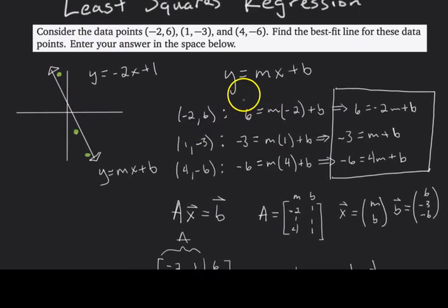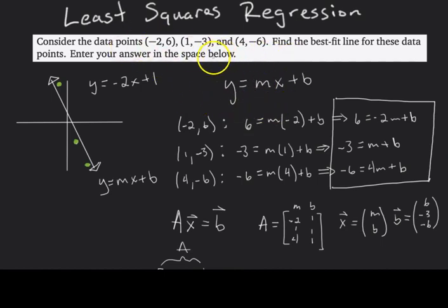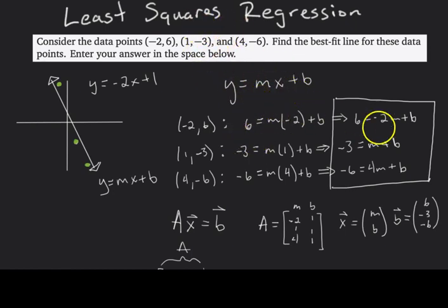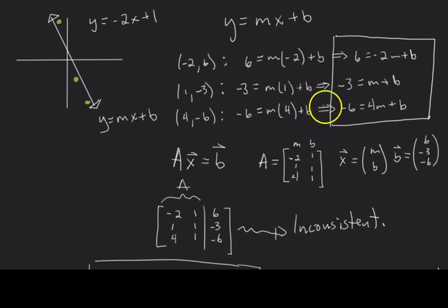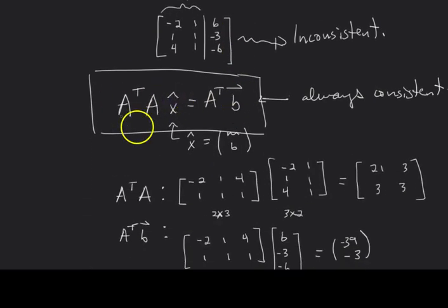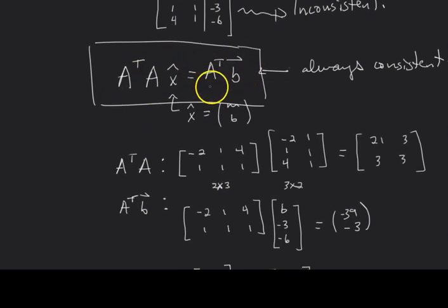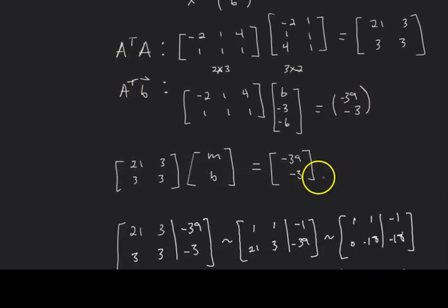In summary, the process is always the same. You're given data points, you write y = mx + b, plug each data point in for x and y to get a system of equations (as many equations as data points), then construct matrix A (coefficients to m and b) and vector b (the constant side). Then you use the formula A^T A x̂ = A^T b, which is always consistent. Compute A^T A and A^T b, then set up the augmented matrix and row reduce to find your least squares solution m and b.